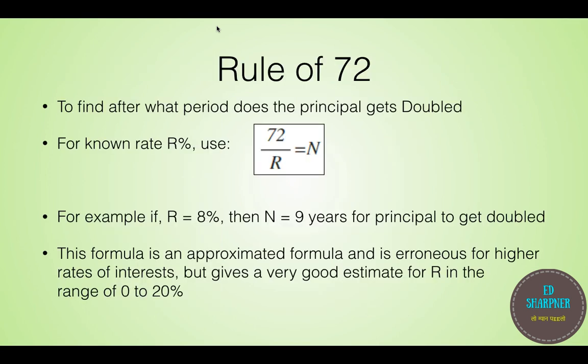The rule of 72. Usually in many problems, it is asked in how many years will the original principle get doubled. To solve this, we need to solve logarithms, but with the rule of 72, you can easily find out the period N for the amount to get twice. Just use N is equal to 72 divided by R, where R is in percentage. For example, if R equals to 8%, we get N equals to 9 years to get principal to its double value.